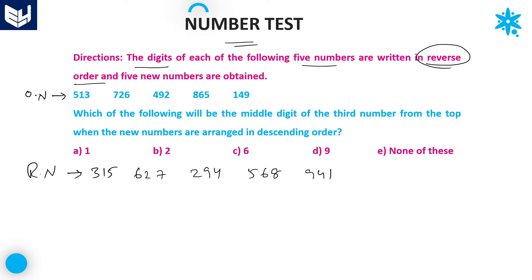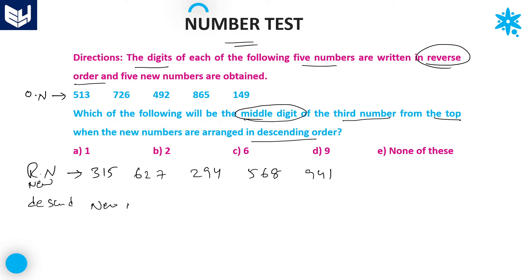These are the new numbers — 5 new numbers obtained after reversing. Now the question asks: which of the following will be the middle digit of the third number from the top, when the new numbers are arranged in descending order? Descending order means from the largest number to the smallest number.